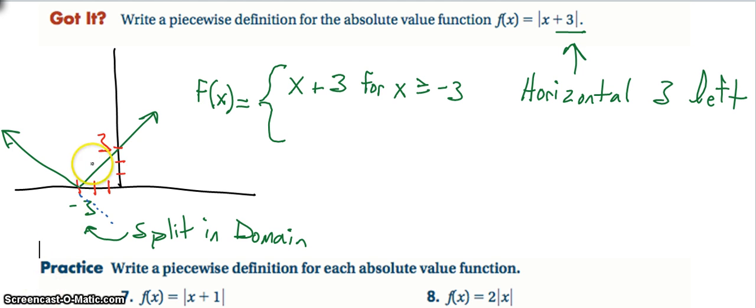So figuring out the equation for the first line should be easier. We see that we have a positive slope of one and that my y intercept is three. So that is just the line x plus three.